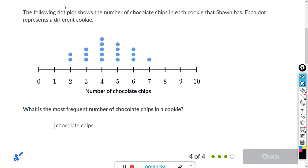Okay, the following dot plot shows the number of chocolate chips in each cookie. Each dot represents a different cookie. What is the most frequent number of chocolate chips in a cookie? Well, each dot represents how often that number occurred.